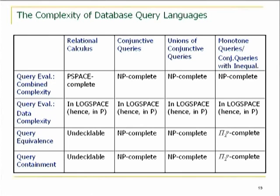So this is the picture. If we also put inequalities, then we get equivalence and containment. Equivalence goes to pi to be complete. So we have exactly the same picture as we had for unions of conjunctive queries.